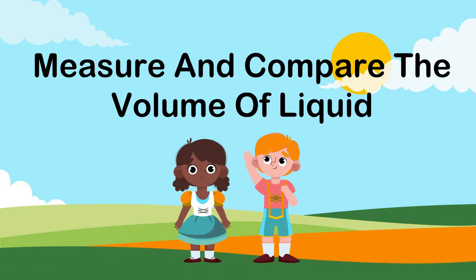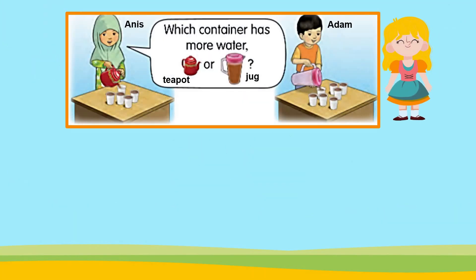Now let's measure and compare the volume of liquid. Look at this picture. Anise can fill five glasses of water from the teapot. Adam can fill seven glasses of water from the jug. So which container has more water — the jug or the teapot?